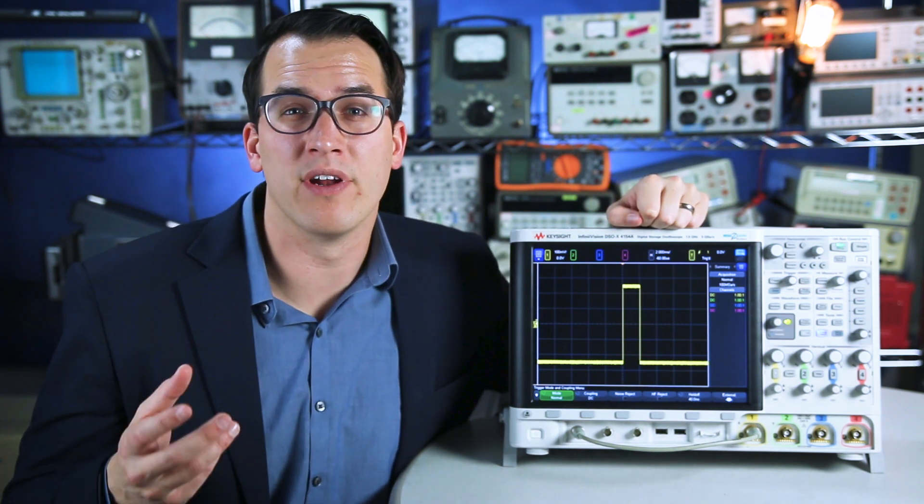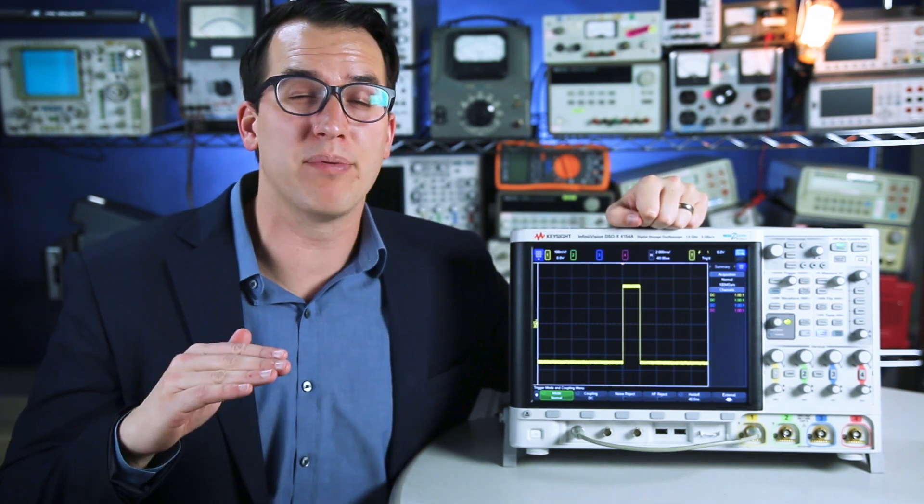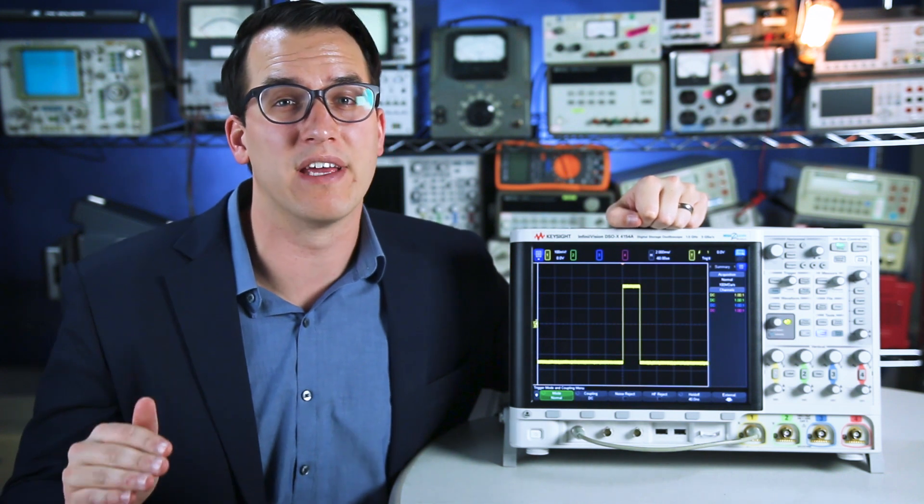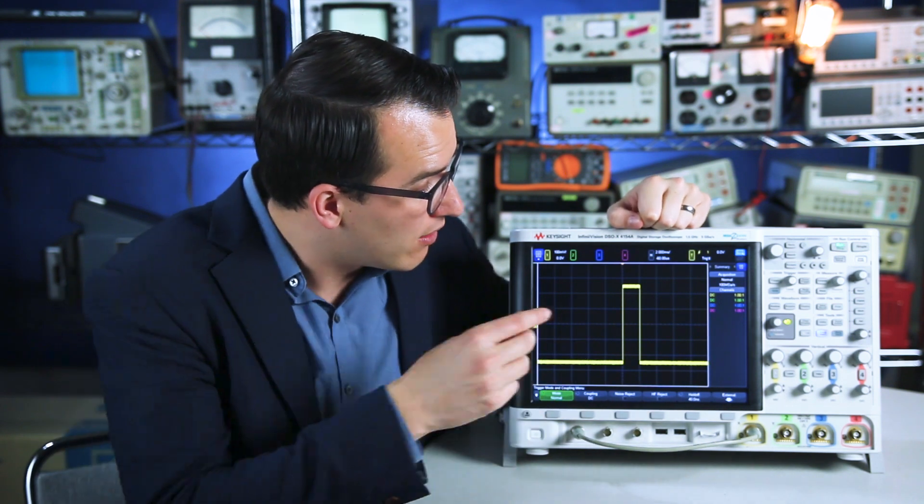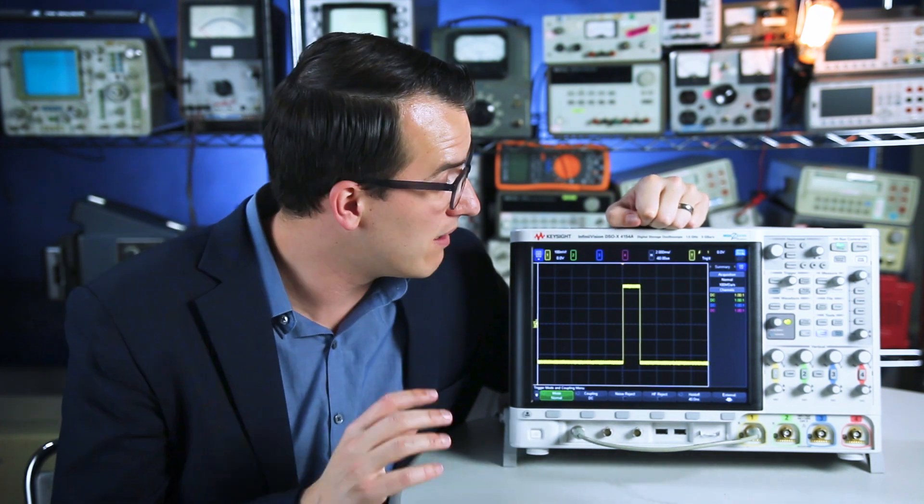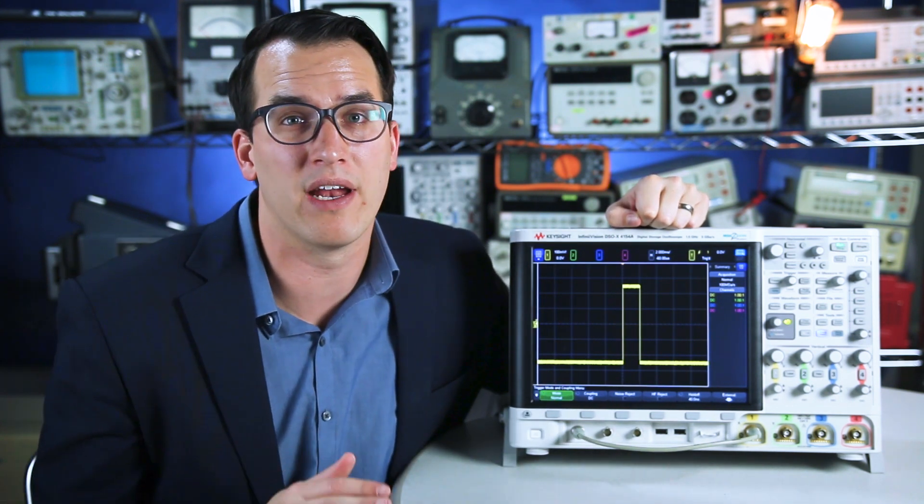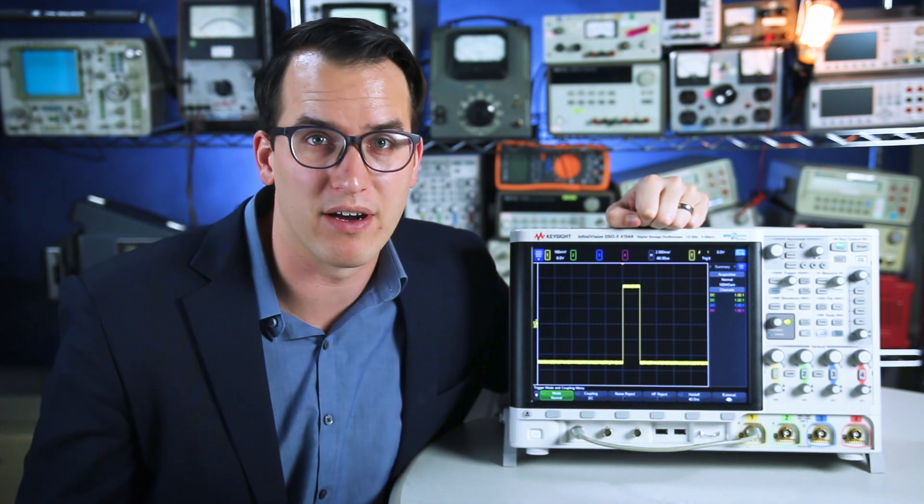Normal mode is fundamentally different in that there's no timeout period. It's simply going to wait as long as it has to to get a valid trigger. And that's why when I switch the scope up to normal trigger mode, I'm getting a regular trigger once per second and I'm not acquiring or displaying any other data except for around that valid trigger.